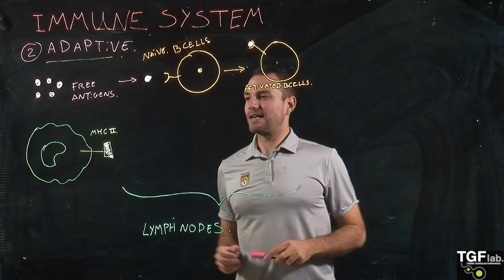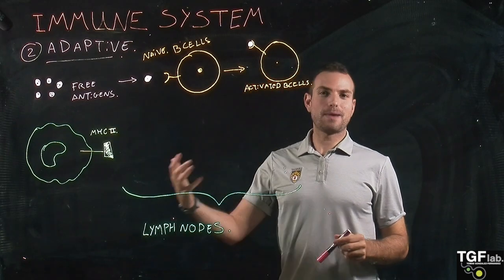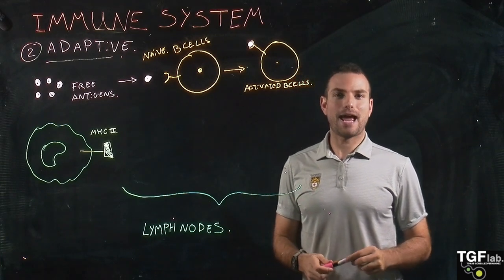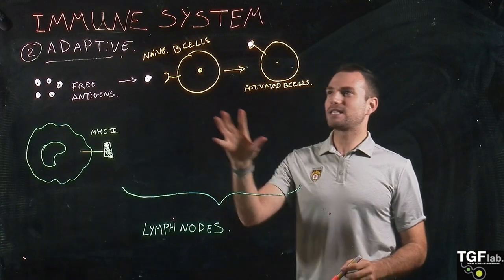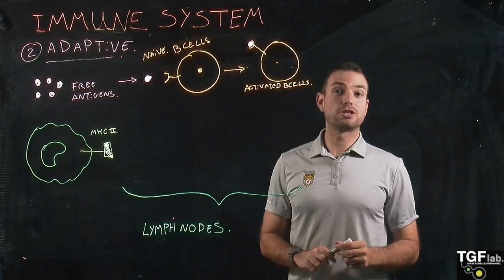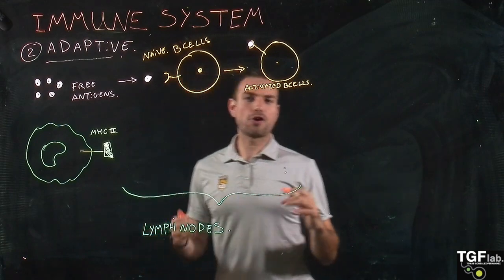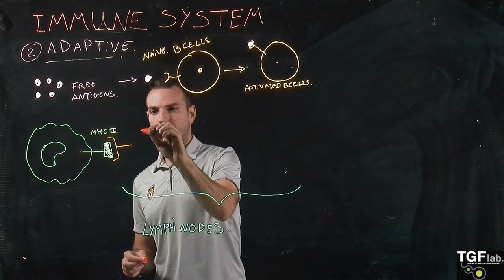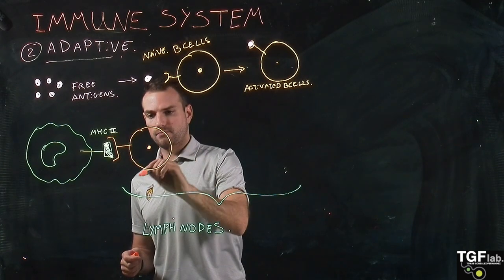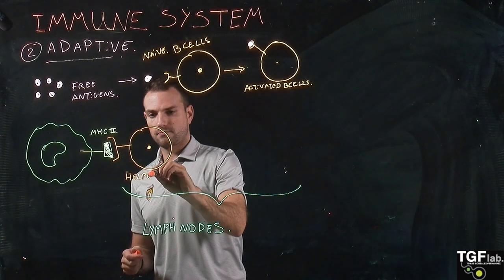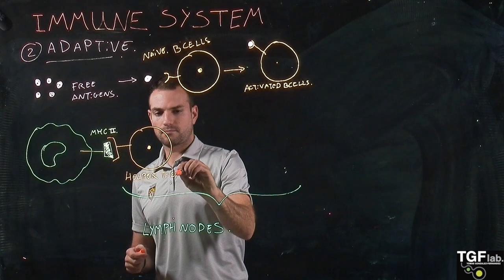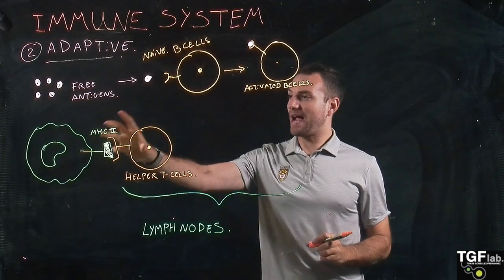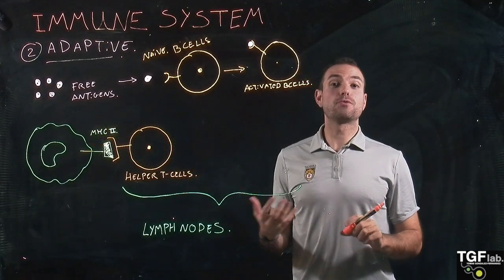At the same time, we have the macrophages, and the macrophages are going to express the antigens in the major histocompatibility complex type 2. These are going to be recognized by another type of adaptive immune cells, which are the T cells — in this case, they are going to be recognized by the helper T cells. By binding to the antigen on the macrophages, the helper T cells are going to be activated.